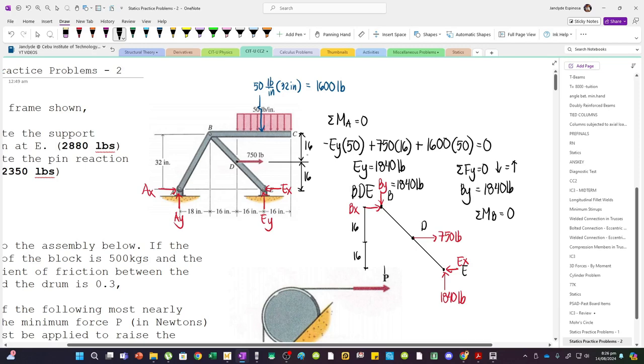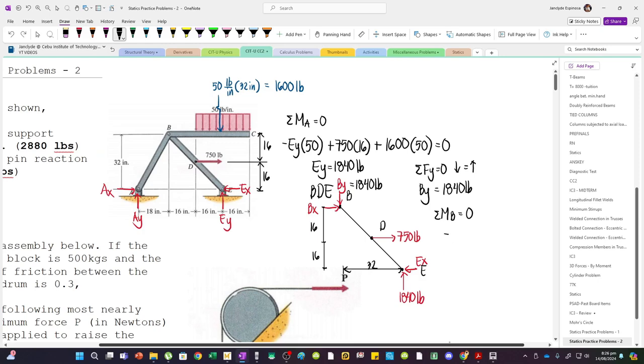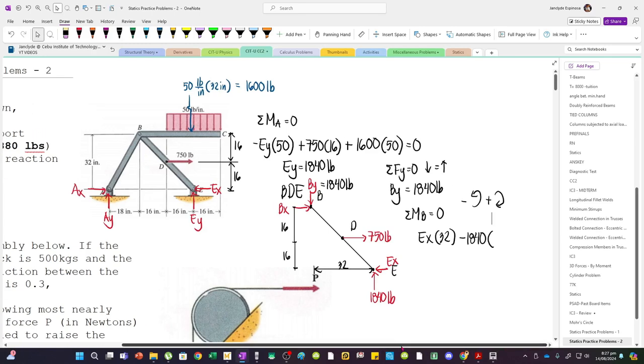And then, the horizontal distance is 16 plus 16, making 32. So, again, we have positive EX. If you hold this, and then you will apply this force, it will rotate clockwise. So, positive EX multiplied by 32. And then, minus 1840. Again, my assumption is always negative for counterclockwise, positive for clockwise. So, 1840 multiplied by 32. And then, there's also 750. It will still cause a counterclockwise rotation. So, minus 750 multiplied by 16.